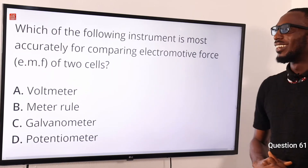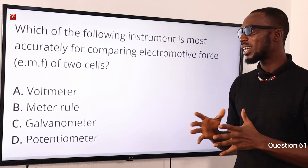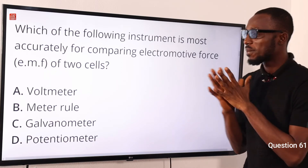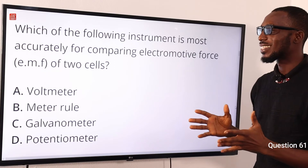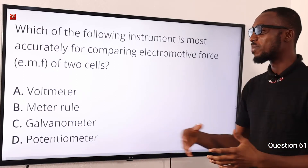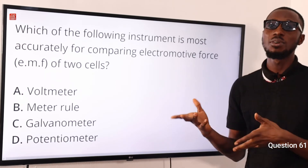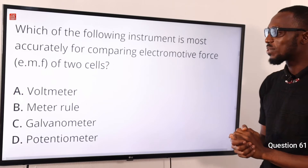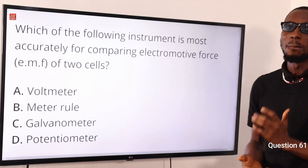Question 61: Which of the following instruments is most accurate for comparing the electromotive force of two cells? That instrument is the potentiometer. It is also used to measure precisely the potential difference and can be used to compare resistances. The correct option is option D, potentiometer.